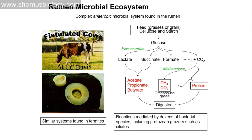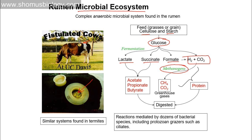A similar type of environment exists in the rumen of a cow — a complex anaerobic microbial system. Cows are fed grasses or grains containing cellulose and starch, which is converted to glucose. Fermentation of glucose produces lactate, succinate, and formate. Formate can be degraded into hydrogen and CO2, which is used by methanogens living in the rumen. They take H2 and CO2 and produce methane and CO2 — both greenhouse gases, which are released. Meanwhile, lactate and succinate can produce acetate, propionate, and butyrate, which are digested by the cow itself.